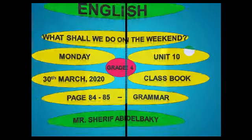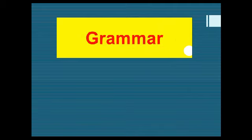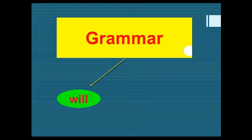Let's start. We have a grammar point for today. If you want to talk about something you will do in the future, we use 'will.' For example: I will go to Paris next year. I will visit my grandparents. So if you want to talk about something you will do in the future, you use 'will.'